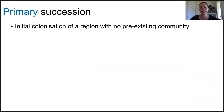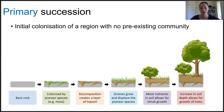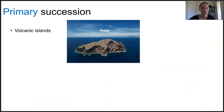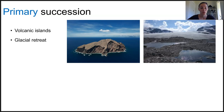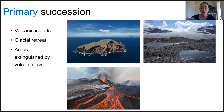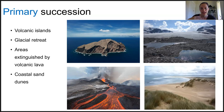Primary succession refers to the initial colonization of an area where there's been no pre-existing community — essentially bare land colonized by organisms for the first time. Some examples include newly emerged volcanic islands in the ocean, land exposed after glaciers retreat, areas completely extinguished by volcanic eruption where lava has cooled, and coastal sand dunes where no life currently exists.